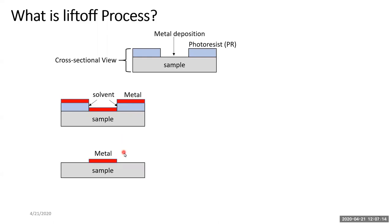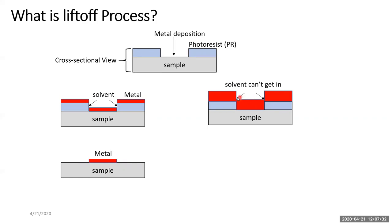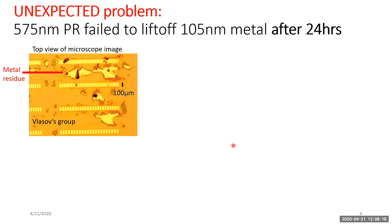After liftoff, what we hope to get is metal only in the areas where we opened the window, and all the metal removed from areas that had resist. However, if your metal layer is thicker than the resist, even soaking the sample in solvent won't work — the solvent doesn't have access to the resist. So you may think that as long as the metal thickness is thinner than the resist, you should have no problem — however, that is not the case.